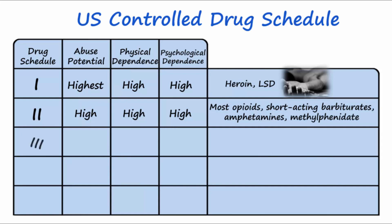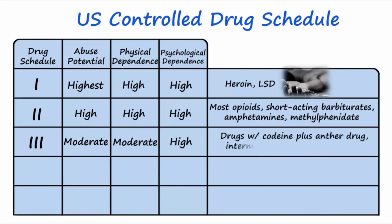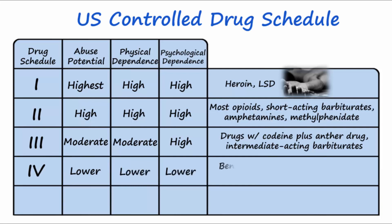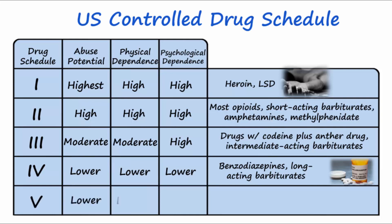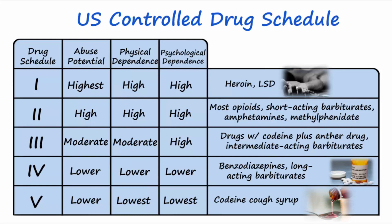Schedule 3 drugs have less abuse potential than Schedule 1 or 2, but are still closely monitored. Schedule 4 drugs have lower abuse potential and include anti-anxiety medications like benzodiazepines. An example of a Schedule 5 drug is codeine cough syrup, which can be obtained without a prescription, typically at the pharmacy. These days, however, many pharmacies self-restrict how much, or if any, codeine cough syrup is dispensed.